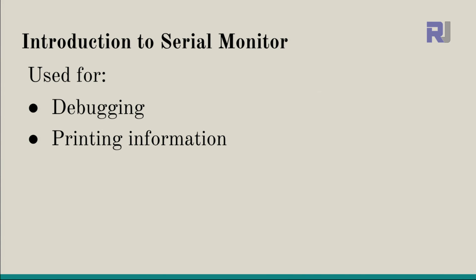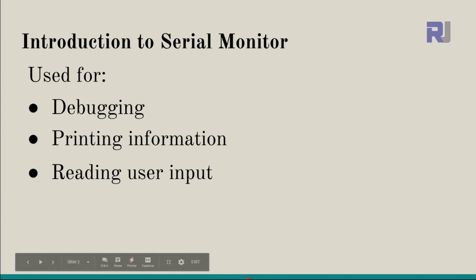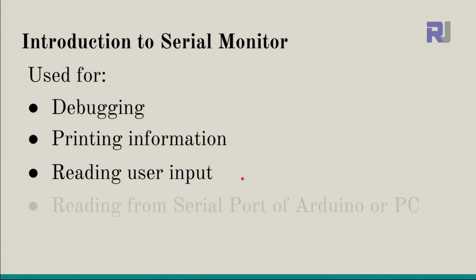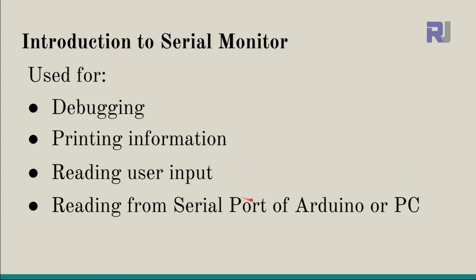For example, you're reading some data or a value and you want to make sure that data exists, does not exist, or is equivalent to some value — you print it and read it. It can also read user input from the serial monitor, where the user can input information at the top. It is also used to read serial port information from Arduino or from a PC, for example from USB or other means of serial communication.